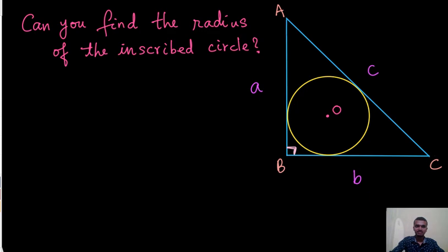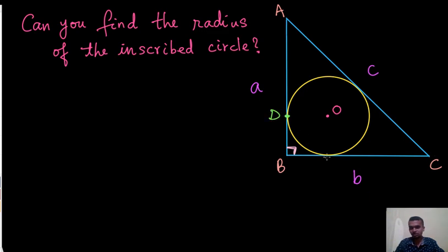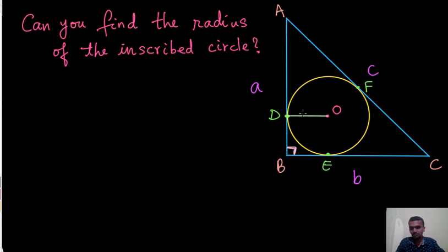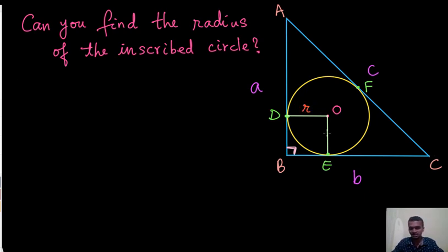I would like to show the radius in the circle, so I'll draw some points. Since the circle is inscribed inside the triangle, it is touching the sides of the triangle, which means the sides are tangent to the circle. I'll draw the points of tangency: point of contact D, point of contact E, and point of contact F. Now if I join O and D, this is a radius of the circle. In the same way, joining O and E is also a radius. Let me name the radius as R — so OD is R and OE is also R.